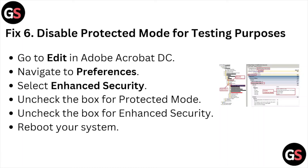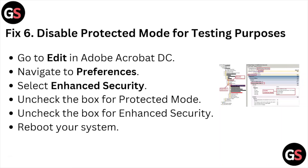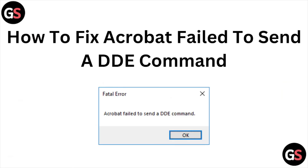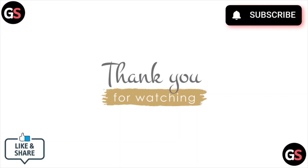Fix number six: disable protected mode for testing purposes. Go to Edit in Adobe Acrobat DC, navigate to Preferences, and select Enhanced Security. Uncheck the box for Protected Mode and uncheck the box for Enhanced Security. Reboot your system.